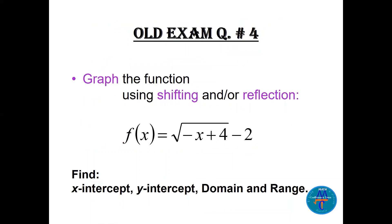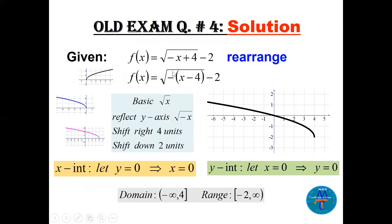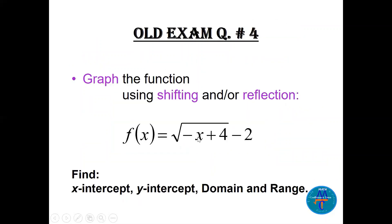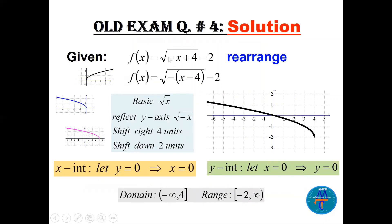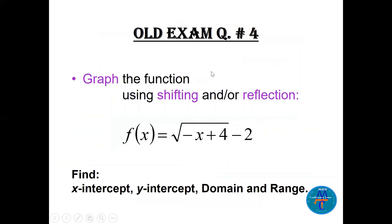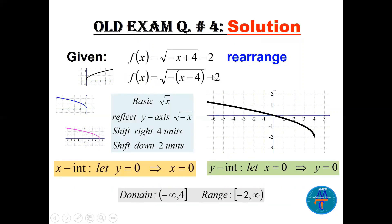Question four: we have a square root function with some transformations inside. We need to graph it and find the x-intercept, y-intercept, domain, and range. A little trick here: with the term −x + 4 inside the square root, you cannot immediately decide the direction of shift. If there is a minus, be careful — factor out the minus to get −(x − 4), so the minus is outside, meaning a shift down.